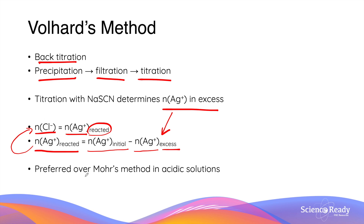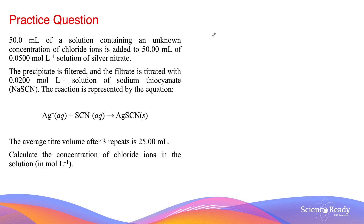Vohar's method is preferred over Mohr's method when determining chloride ion concentrations in acidic solutions. This is because the presence of hydrogen ions does not interfere with any steps of Vohar's method. Let's look at Vohar's method using a calculation example.